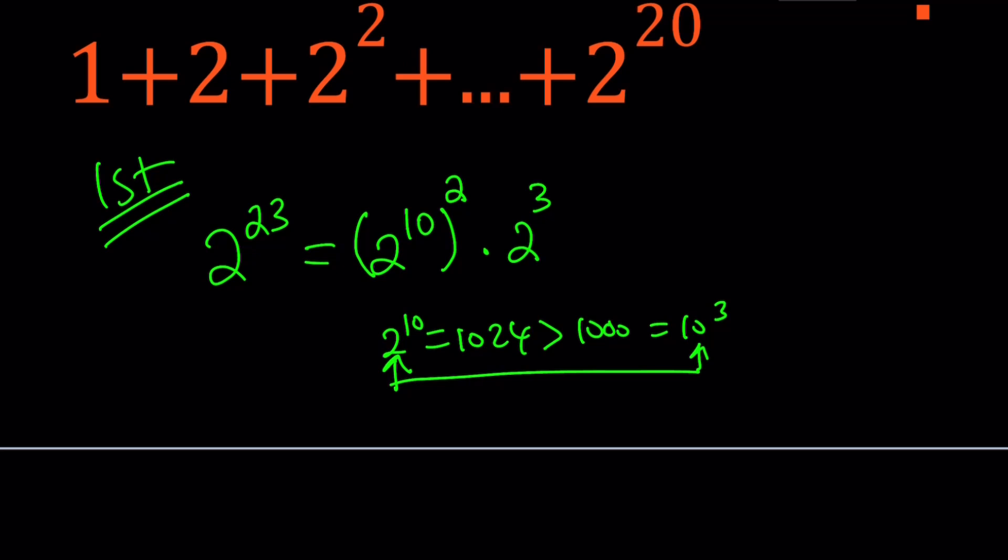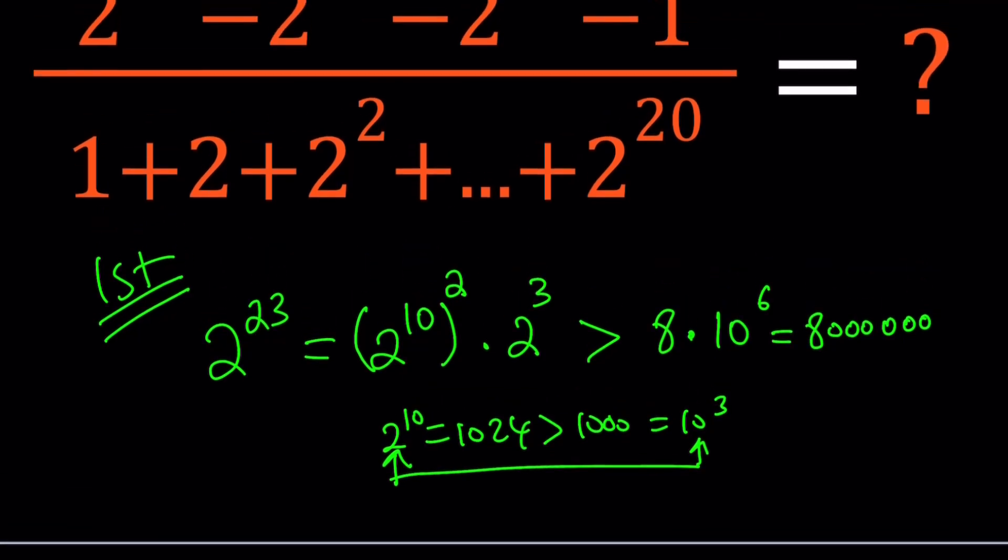Now, notice that 2 to the 10 is greater than 1,000, which is 10 to the 3rd. So, this number is going to be greater than 8 times 10 to the 6th power, which is 8,000,000. So, our number is basically greater than 8,000,000. And then we're subtracting 2 to the 22, which is going to be roughly 4,000,000. And then from that, we're going to subtract another number. And then finally, 1.